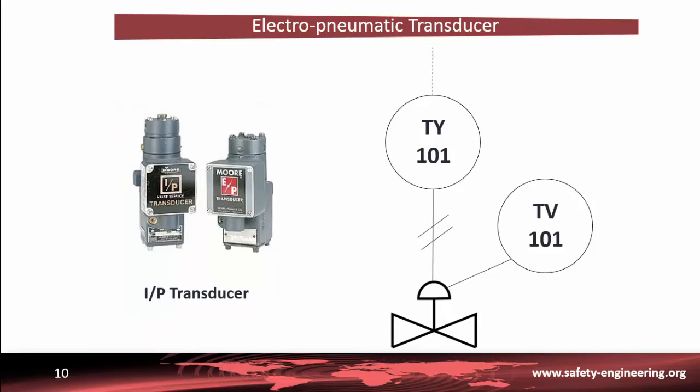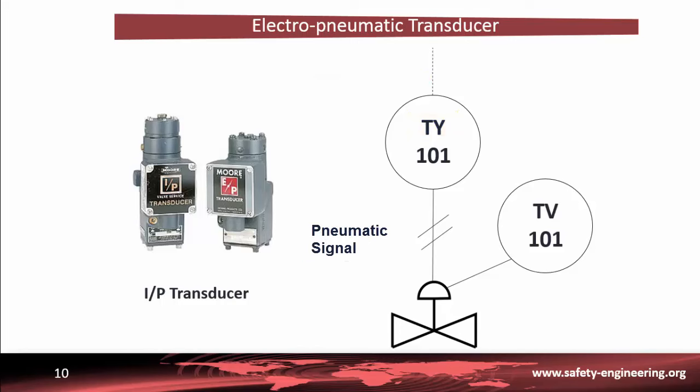The figure shows an example of a P&ID diagram. The tagging convention for the IP transducer is the letter Y. TY means an IP converter for temperature regulation. The input of this device is an electrical signal, shown by a dotted line, and the output is a pneumatic signal, shown by a slashed line.